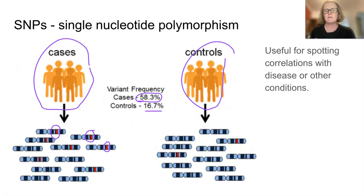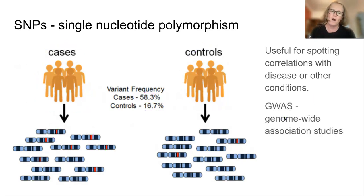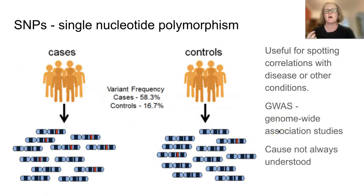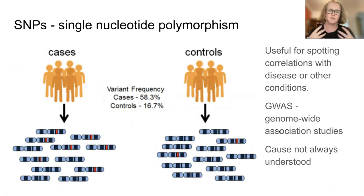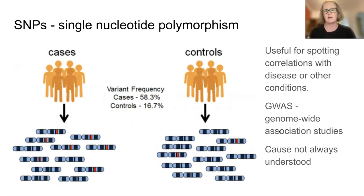That means we can screen people, check, or raise awareness. This is called a genome-wide association study, where we look across the whole genome and see if we have correlations or associations between two different things. Sometimes it's obvious because the SNP occurs in a gene and it clearly causes an amino acid change in a protein. But sometimes we don't yet understand why the association is there.